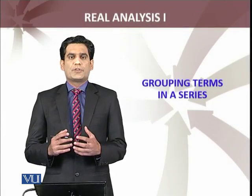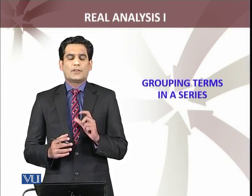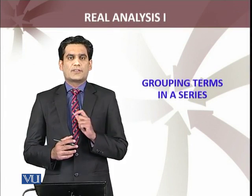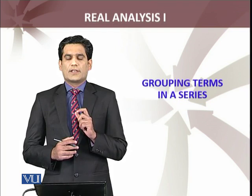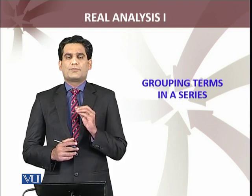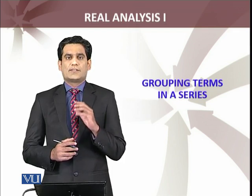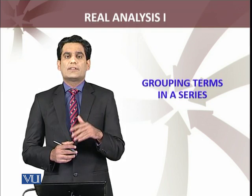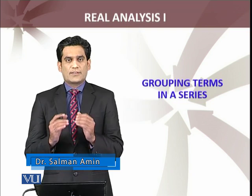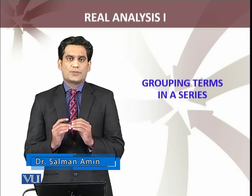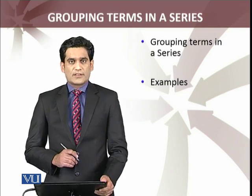Let's apply the result we discussed about the grouping of series to an example. We discussed the alternating series and the alternating series test was discussed and proved. Suppose we have a series summation of minus 1 raised to power n satisfying the alternating series test, which means the series is convergent. Now we look at grouping terms in a series as an example.